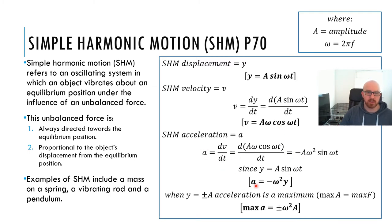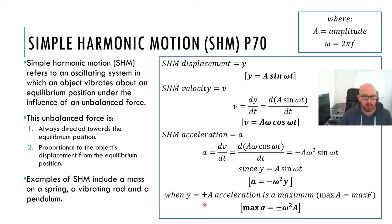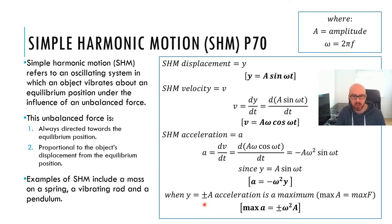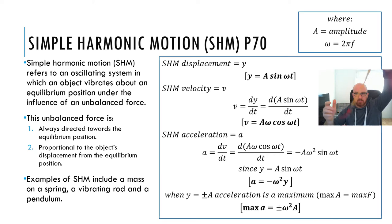We can then work out the acceleration by differentiating one more time. We differentiate Aω cos(ωt) with respect to t and get −Aω² sin(ωt). Since y = A sin(ωt), we substitute that in and get a = −ω²y. This means the maximum acceleration occurs when y equals A — at the very top and very bottom of the motion, the system experiences the greatest acceleration.